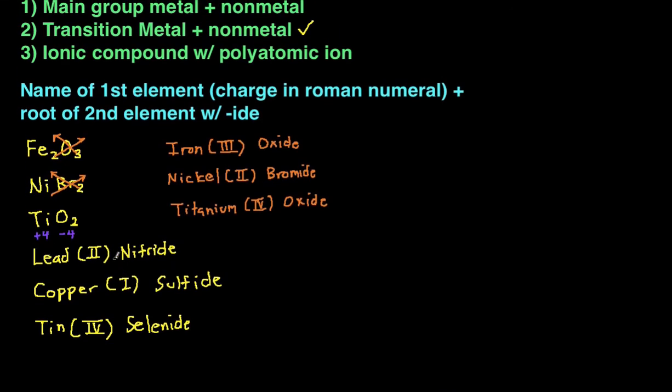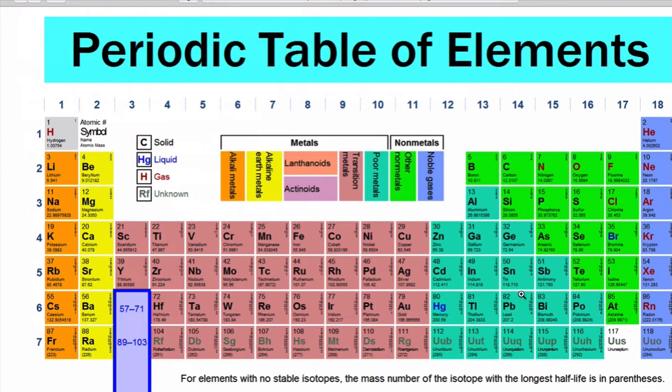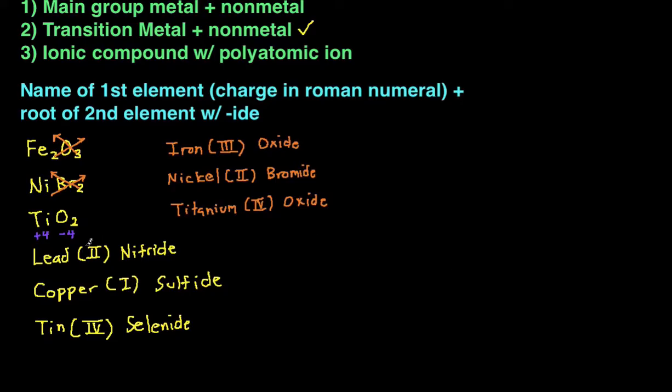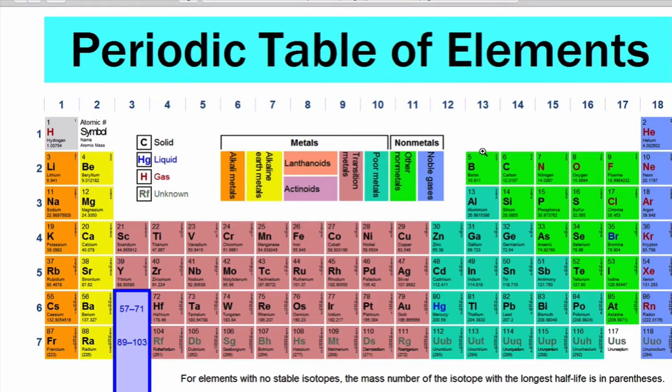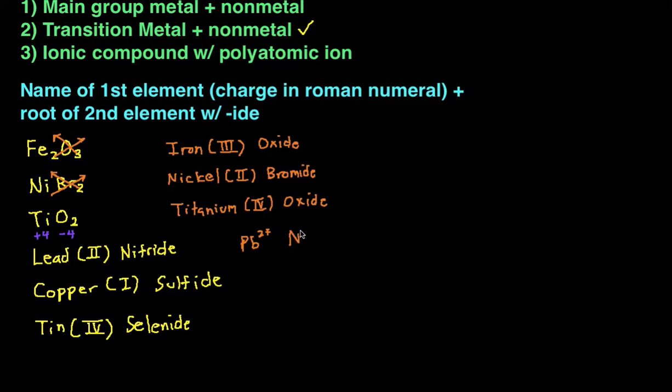Alright, so lead nitride. We look at where lead is. Lead is down here. So it's not technically a transition metal, but lead and the elements around it, these elements right here, they sort of act as transition metals because they have multiple charges. So we have lead, we're going to write Pb. And it's positive 2 charge because it tells us there's 2 in the Roman numeral. And then nitride is nitrogen, and that's a negative 3 charge if we count it over. So then we have N3 minus. And then now we can crisscross. We make sure first that these charges don't cancel each other out. Then we crisscross. So it becomes Pb3N2.